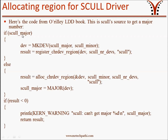In the else part, if skull_major is 0 by default, alloc_chrdev_region is used to allocate a major number on the fly for the Scull device. Once this is done, we use the MAJOR macro to extract the 12-bit major number from the device variable. Finally, we check the result — a variable carrying the return value of register_chrdev_region or alloc_chrdev_region — and handle any error if it is less than 0. MAJOR and MKDEV macros were discussed in Linux Device Driver Part 12.